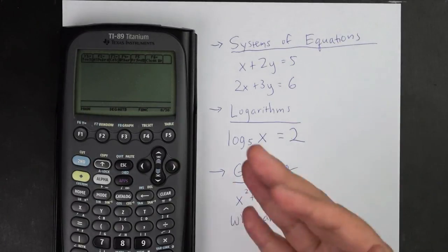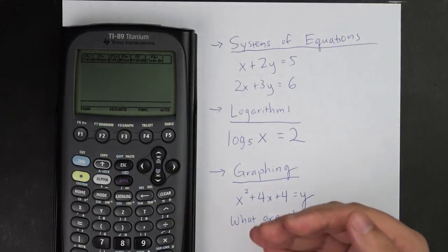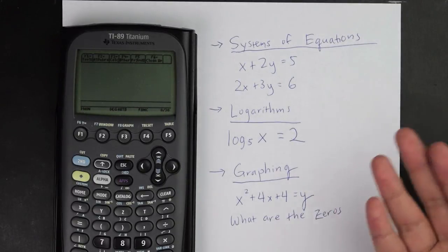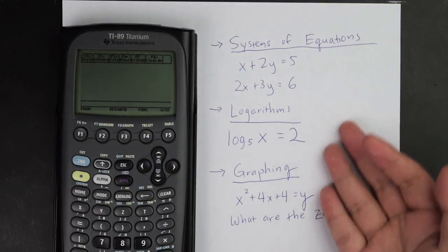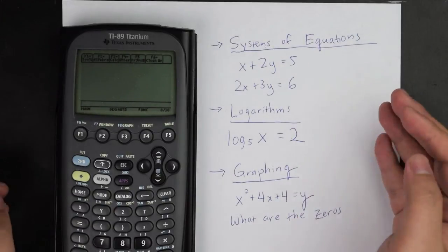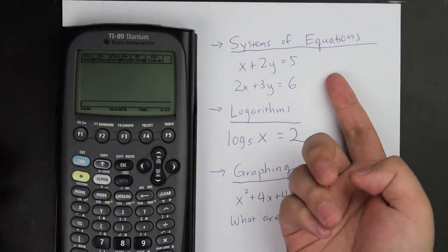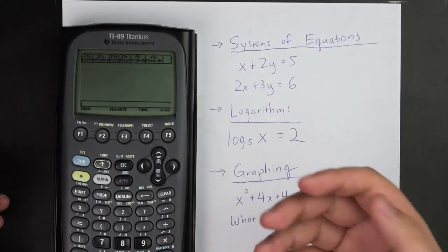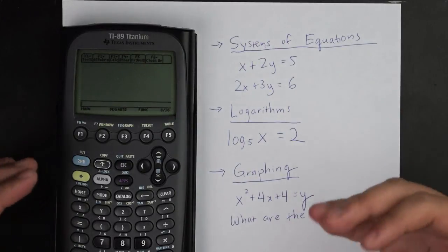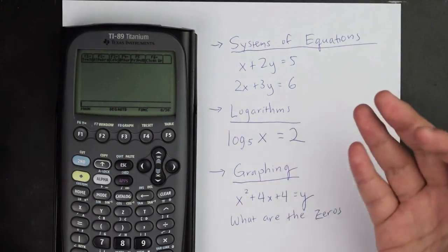And so unlike the TI-84, TI-89 can actually solve for functions based on what you need. So I have listed right here some of the things, for example, that you could use. So for example, if I want to solve a system of equations, and I wrote an example right here, x plus 2y equals 5, 2x plus 3y equals 6, how do I solve it?